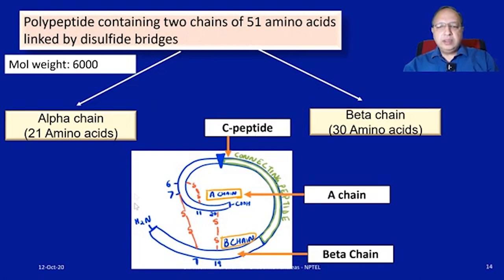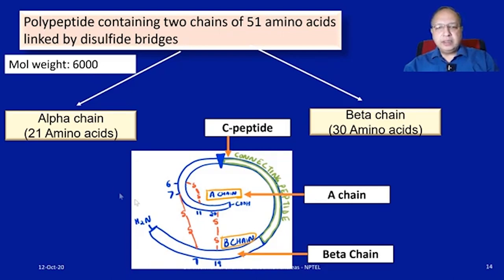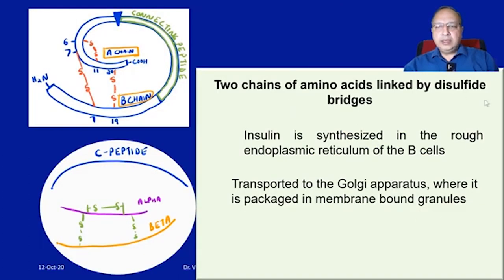Insulin is a polypeptide containing 51 amino acids linked by disulfide bridges. There is one intrachain disulfide bridge within the A chain, and two disulfide bridges between the A chain and B chain. The A chain has 21 amino acids, the B chain has 30 amino acids, and there is a connecting C peptide. The total molecular weight is 6,000.